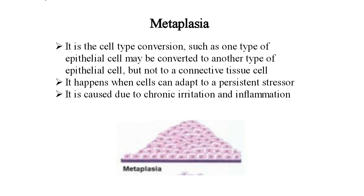Metaplasia is a cell type conversion, such as when one type of epithelial cell may be converted to another type of epithelial cell. It is caused by chronic irritation and inflammation — it happens when cells adapt to a persistent stressor.